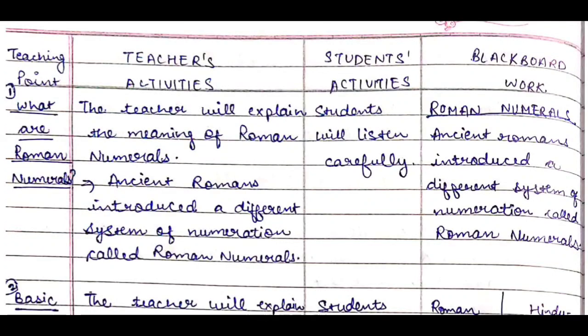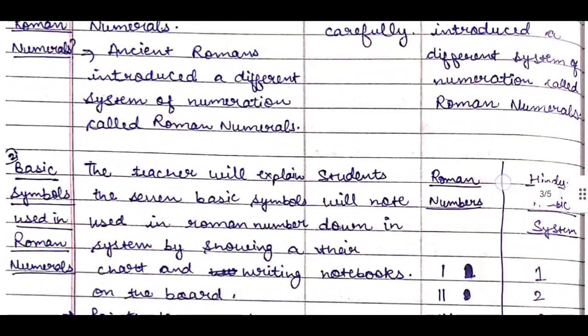First teaching point is: What are Roman numerals? The teacher will explain the meaning of Roman numerals. She will say: Ancient Romans introduced a different system of numeration called Roman numerals. Students will listen carefully and we will write the same definition on the blackboard. We will write the heading Roman numerals and then we will write the definition.